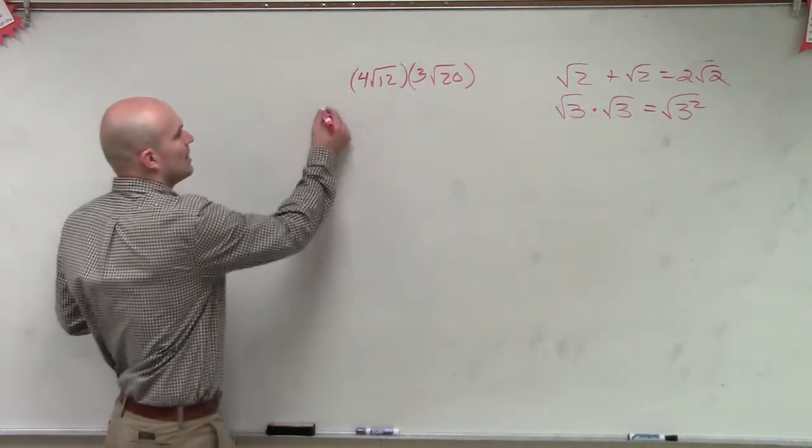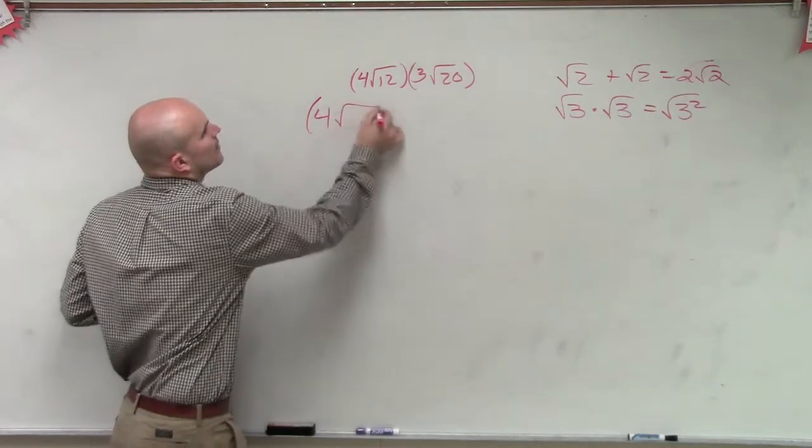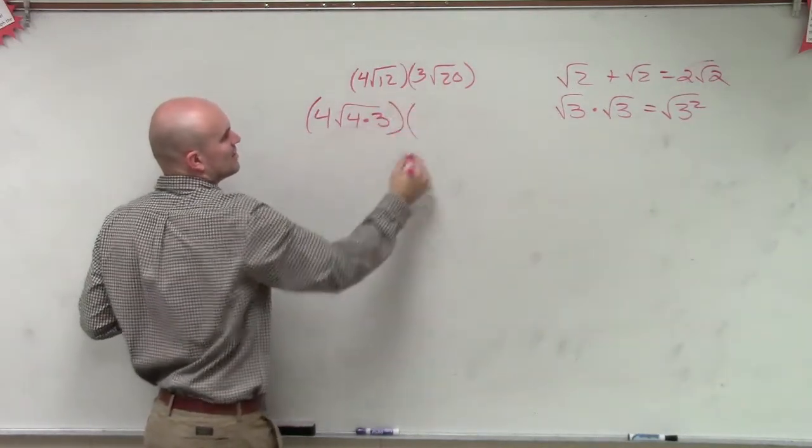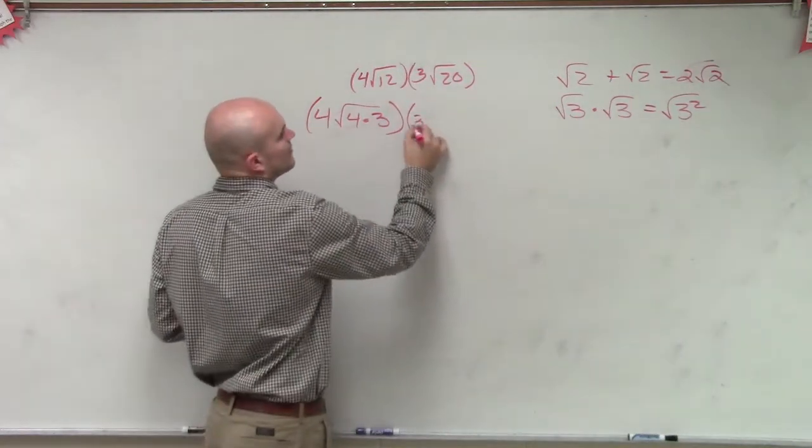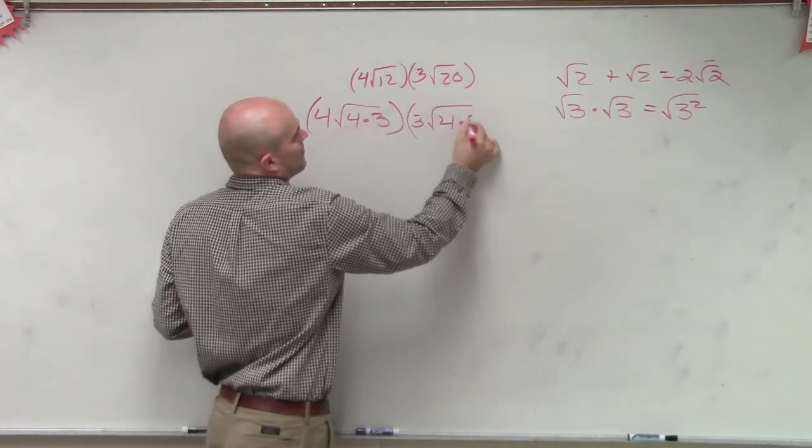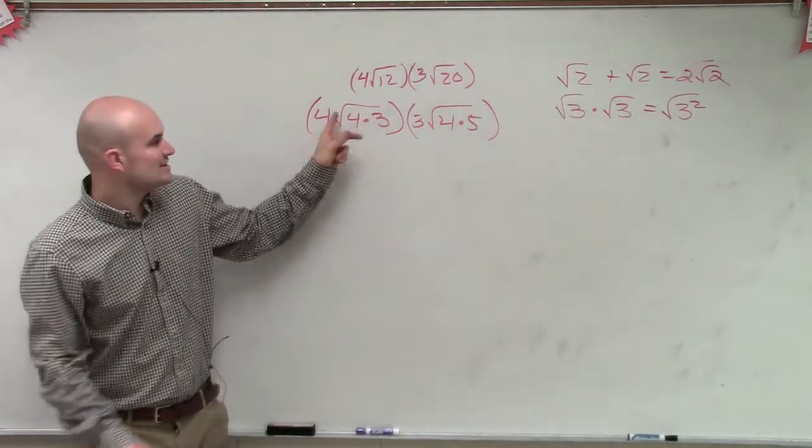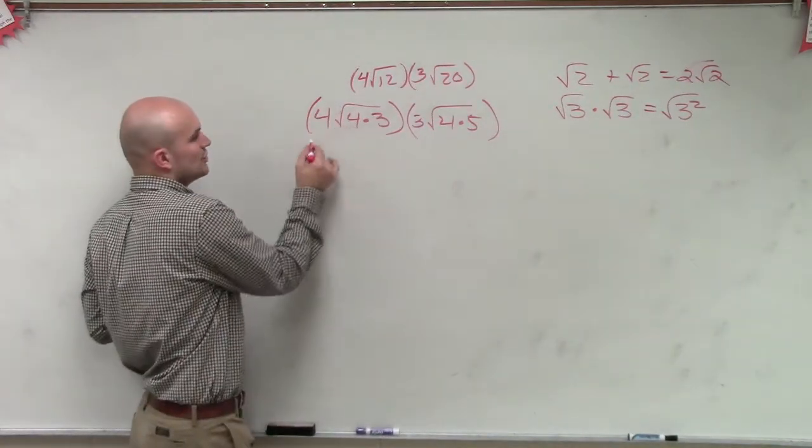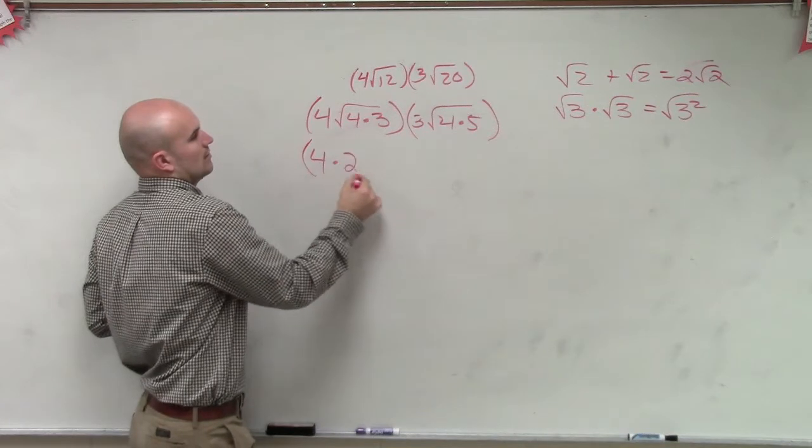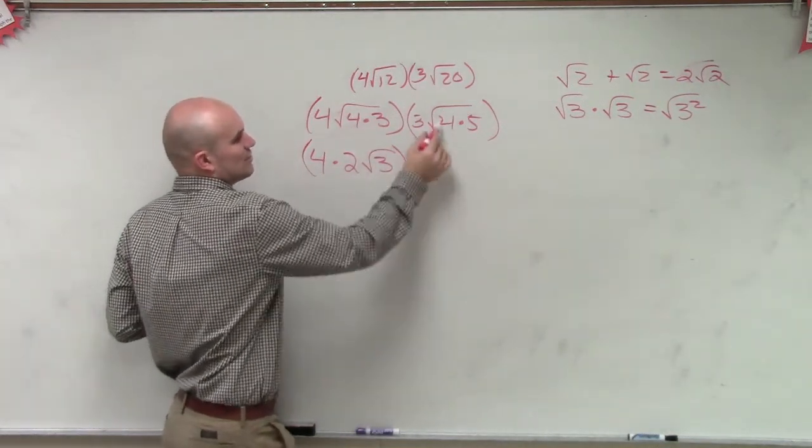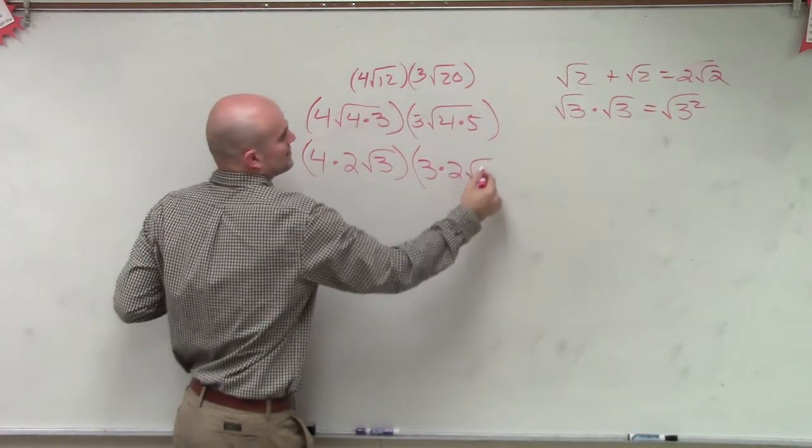Yes, we can reduce that down to what? 4 times 3. And then can we reduce the square root of 20? Very good. Now that I've simplified these, now what I do is I say, all right, the square root of 4 is 2 times square root of 3 times the square root of 4 is 2 times square root of 5.